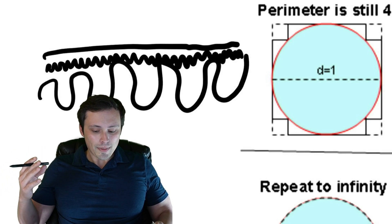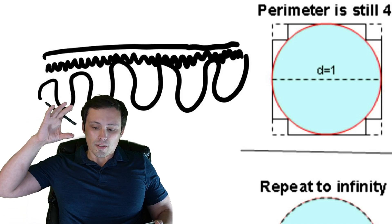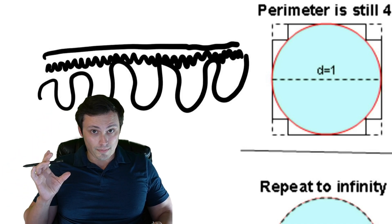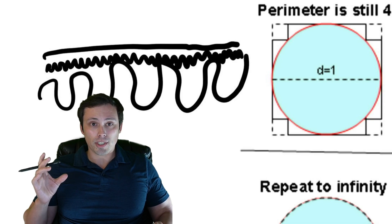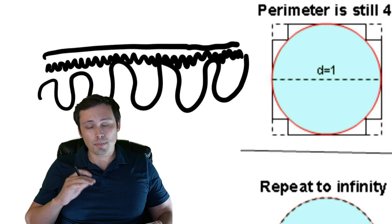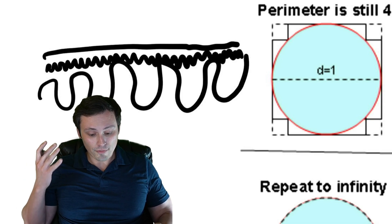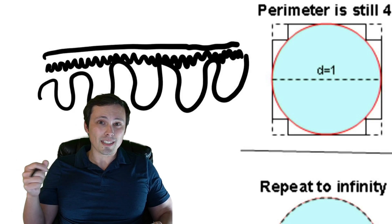And that's the underlying intuitive way to understand what's wrong with this argument, because as the shape starts to look more like the circle, its area is approaching the area of the circle, but its perimeter is not. Its perimeter is remaining four, just like if you coiled up a rope.